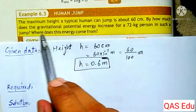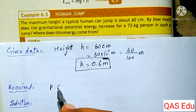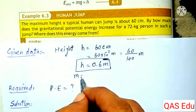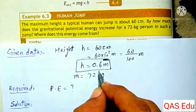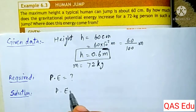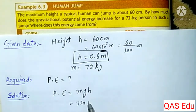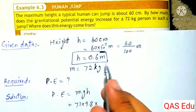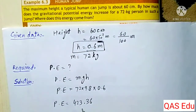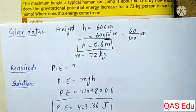By how much does the gravitational potential energy increase? The potential energy equals M·g·H, where M is 72 kg, gravitational acceleration g is 9.8 m/s², and H is 0.6 meters. The result is 423.36 joules.